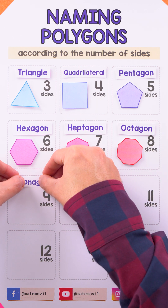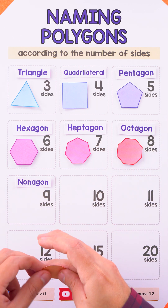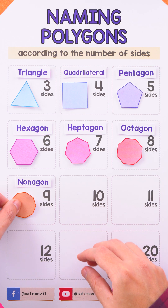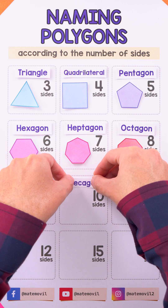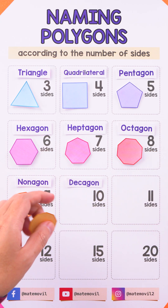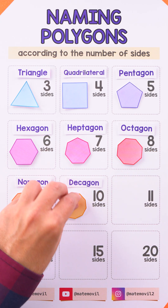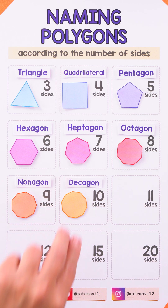Let's continue with the nonagon. This is a polygon with nine sides — here we have an example. Our next shape is a decagon, and a decagon has 10 sides.